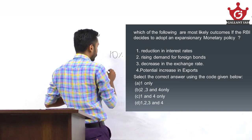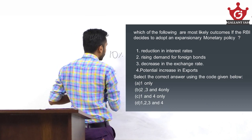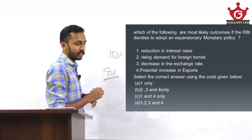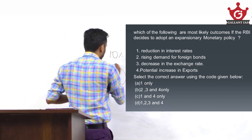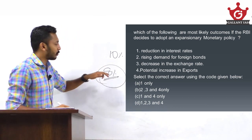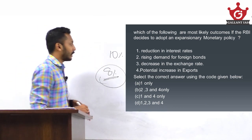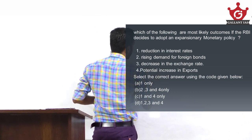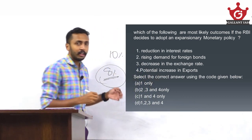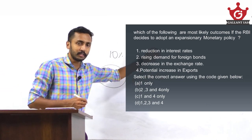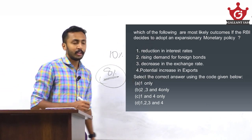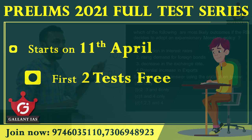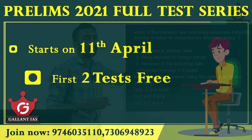For example, if the interest rate for a domestic bond is 10%, due to expansionary monetary policy it will reduce to 8%. Now the domestic bond gives 8% return, while a foreign bond gives 10% — automatically everyone will prefer the foreign bond. So rising demand for foreign bonds is also a correct outcome.